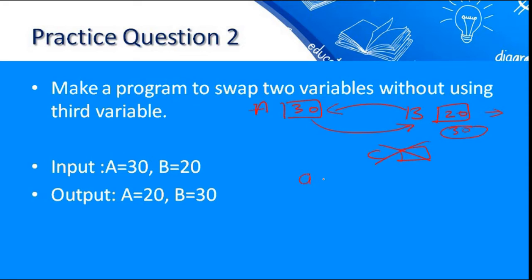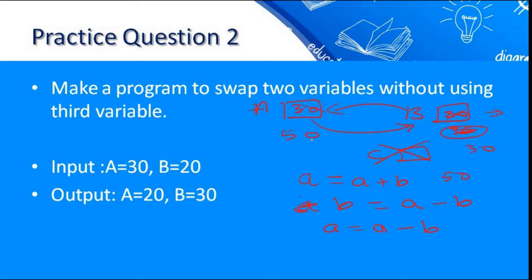There is a simple arithmetic approach. We write a = a + b, so a becomes 30 + 20 = 50. Then we write b = a - b, so b becomes 50 - 20 = 30. Then again a = a - b, so a becomes 50 - 30 = 20. In this way the values are swapped without using a third variable.